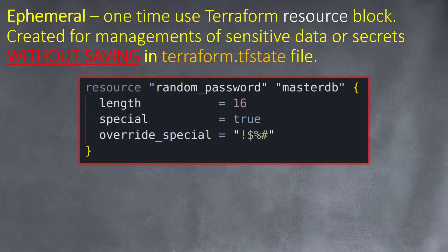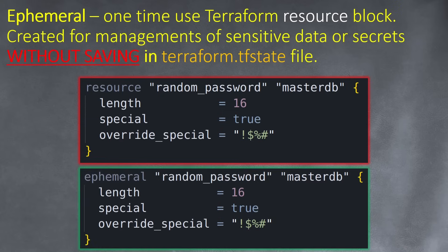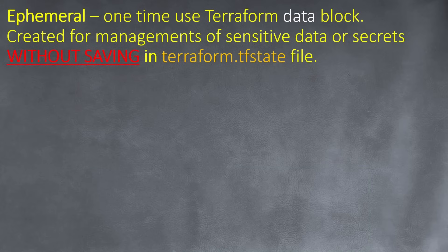The old way was to create a resource called random_password which generates a random string. All the details of that random password are saved in the Terraform state file — you can see the password itself. You can use ephemeral for this instead: ephemeral random_password will generate a password but will not save anything in the state file, whether remote state or local.